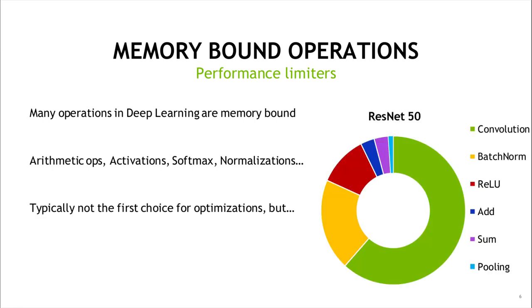These memory-bound ops are not the typical first choice for optimization, but they can take a surprisingly high percentage of total deep learning training time. For example, in a well-optimized ResNet-50 model we looked at before the first round of MLPerf Benchmark, we see that on a V100 the convolutions take about 60% of total time, and the remaining 40% is taken by different memory-bound operations like batch norm, ReLU — which takes over 10% of the time — addition, gradient summation, and pooling. As we go to newer hardware, this picture looks even worse: convolutions get sped up more than the memory-bound layers, so memory-bound layers take an even higher percentage of total time.